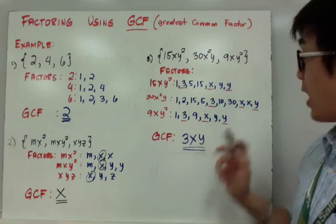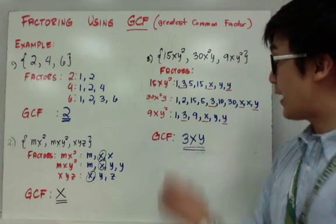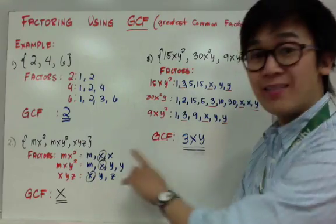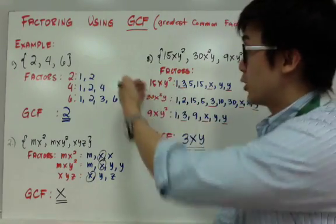And for 9xy squared, I have 1, 3, 9xy. Now I need to find the greatest common factor for each term.